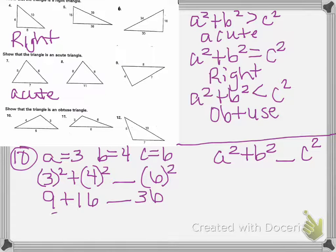We know that 9 plus 16 is 25, and we know that 25 is less than 36, so number 10 is an obtuse triangle.